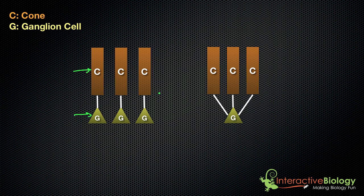This is the same for cones or for rods, but we're going to focus on cones because that really gives us a lot of detailed vision. Now the cones are connected to bipolar cells, and those bipolar cells are connected to ganglion cells.